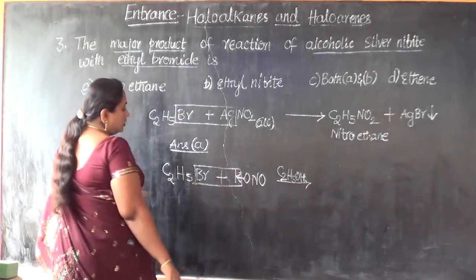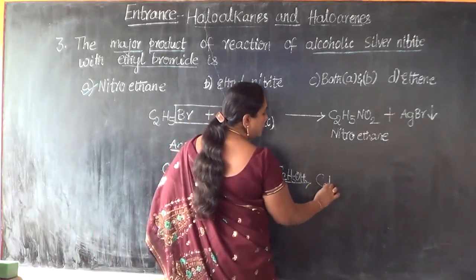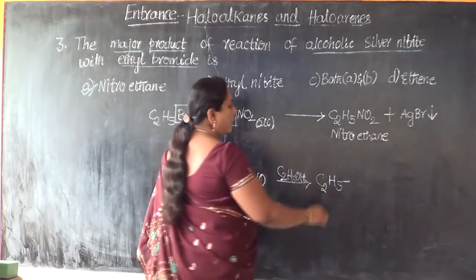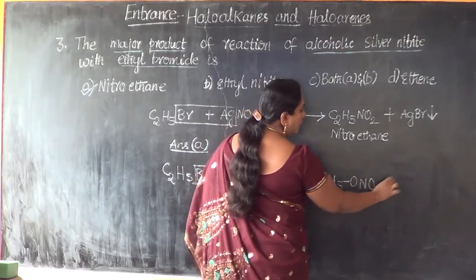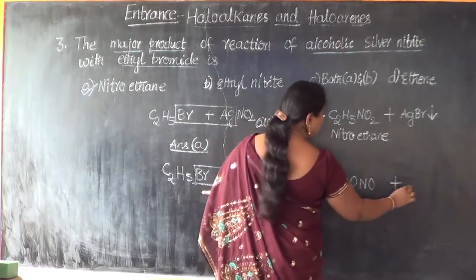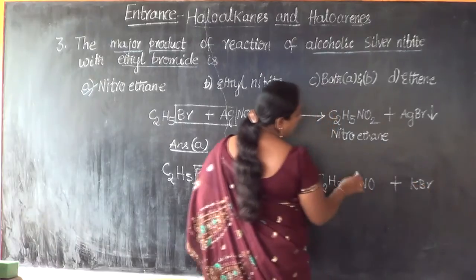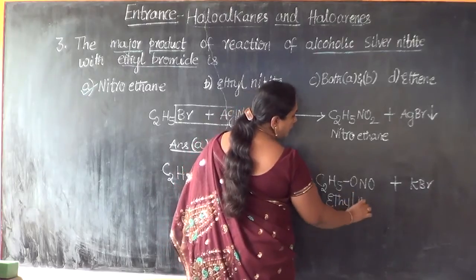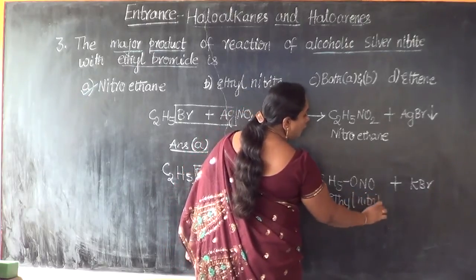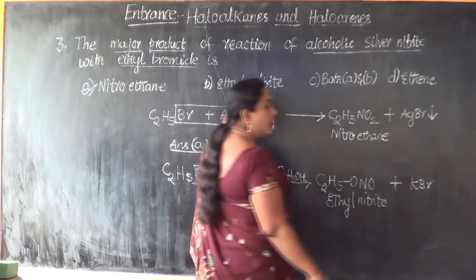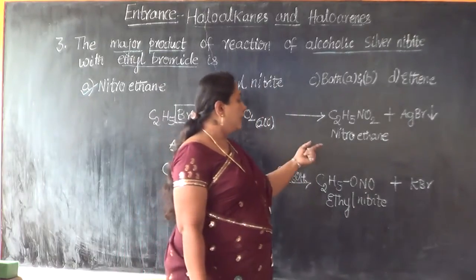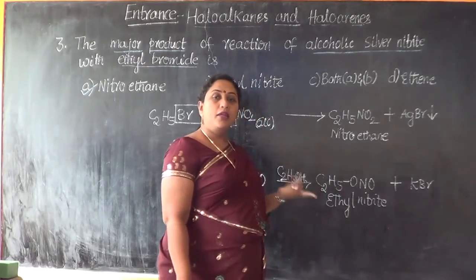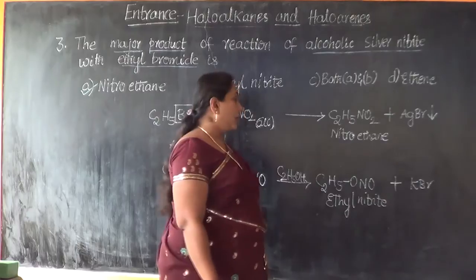With potassium nitrite, KBr goes out, and C2H5 will be linked through oxygen — C2H5–O–N=O — along with KBr as a byproduct. Therefore, what is the product in that case? Ethyl nitrite will be the major product, though we will also obtain a small quantity of nitroethane. So with alcoholic KNO2, ethyl nitrite is the major product and nitroethane is the minor product.